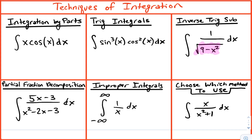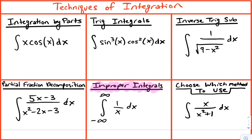With inverse trig substitution you do a special type of substitution using a trig function and it works out really nicely. Then there's partial fraction decomposition — the one everybody hates — where you have a large fraction and you break it up into smaller fractions to integrate more easily. It's a long process but not really hard. We also cover improper integrals.